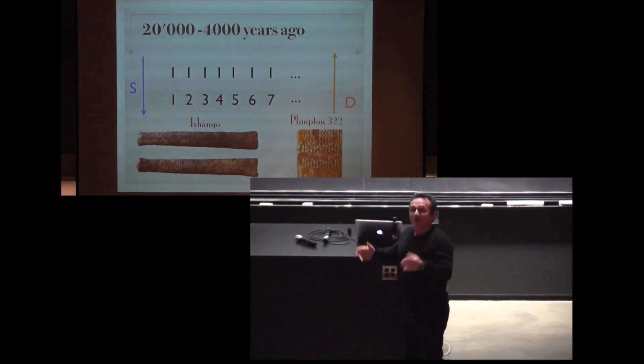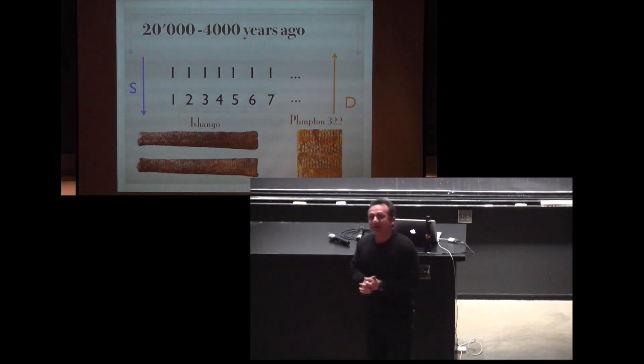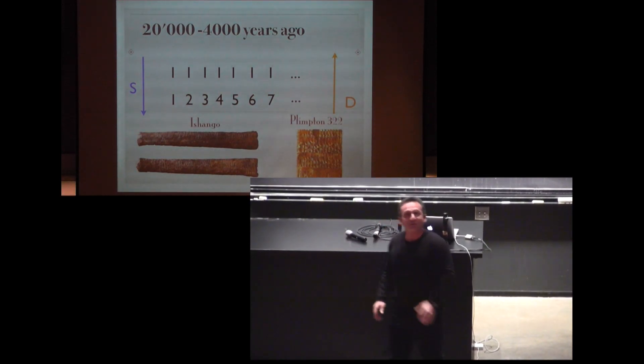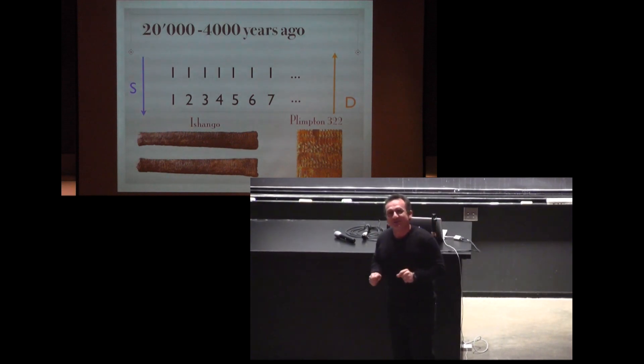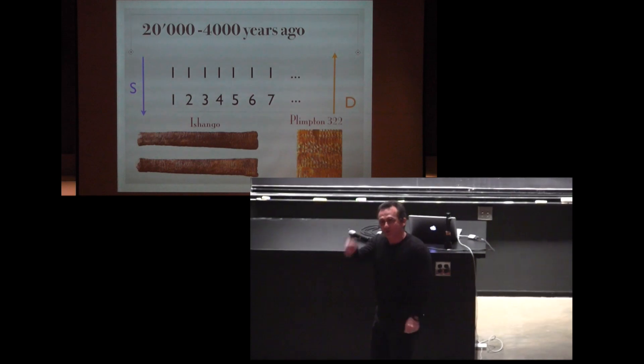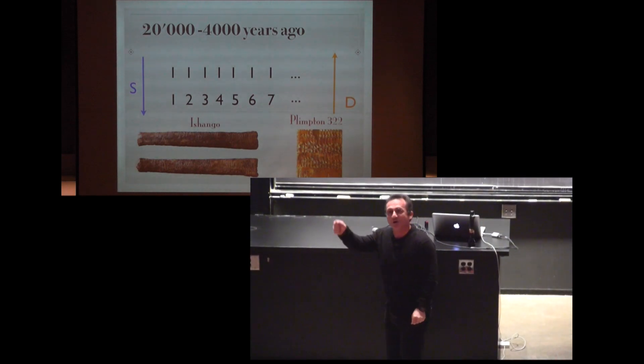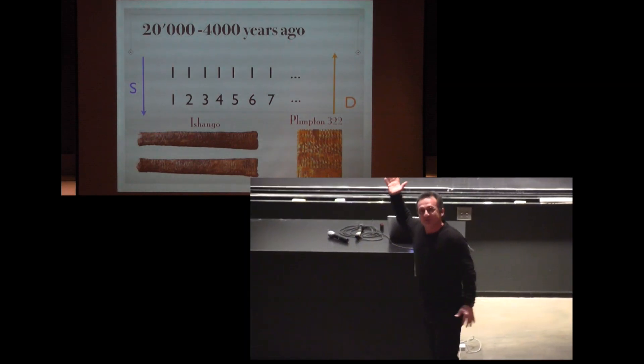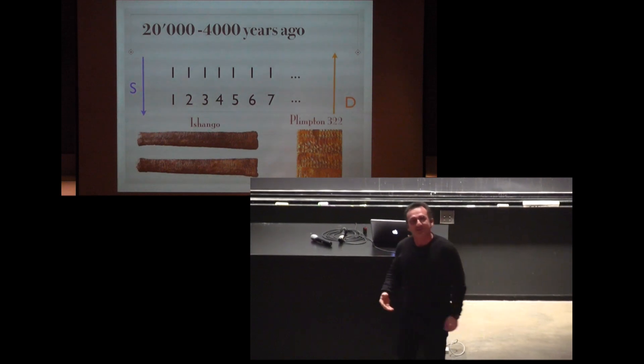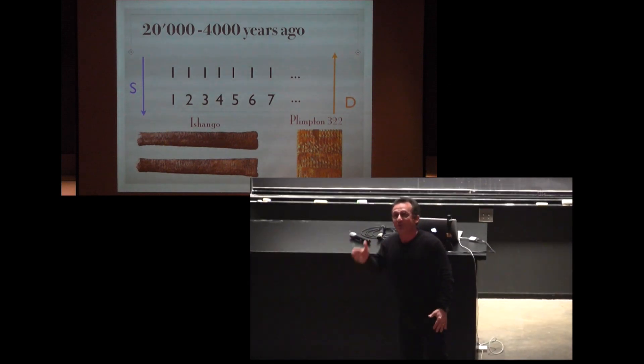We are going back 20,000 years ago when mathematicians were writing on bones, like the Ishango bone, and I want you to think about these marks as a function, as a constant function 1, 1, 1, 1, 1, 1. And introducing the numbers is a summation process. Like 4 is 1 plus 1 plus 1 plus 1.